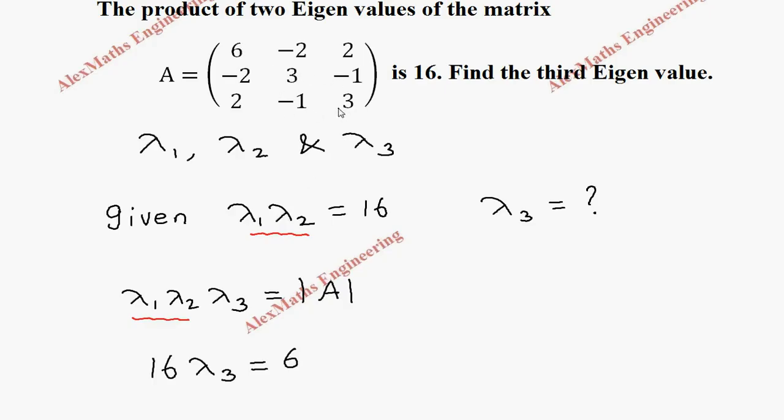Then we have to take this small determinant: 3, minus 1, minus 1, 3. So this value is 3 into 3 which is 9 minus minus 1 into minus 1 which is 1.